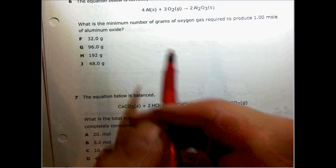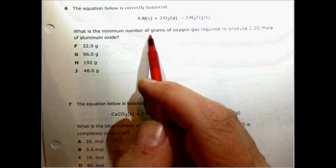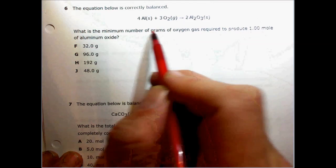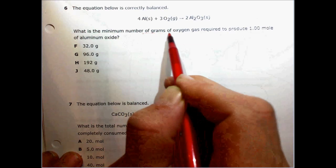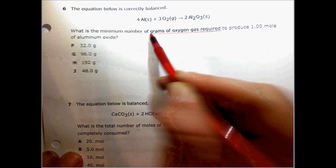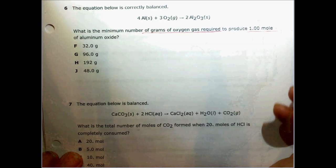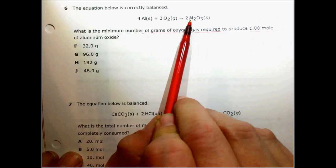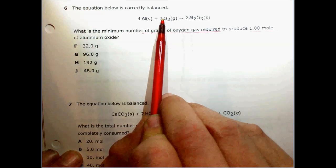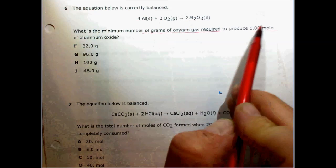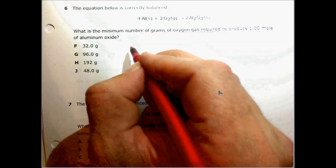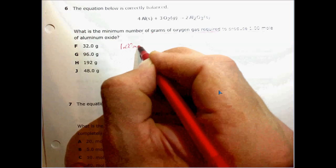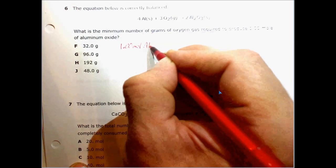Question number six — similar equation, actually the same equation. In this case they're asking us the minimum number of grams of oxygen required to produce a mole of aluminum oxide. We're going to work backwards with aluminum oxide and calculate grams of oxygen. Our basis is 1.00 mole of Al2O3.